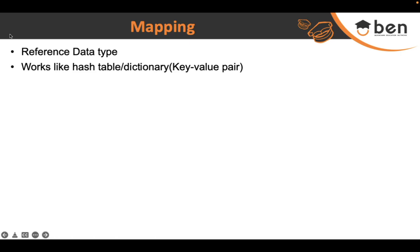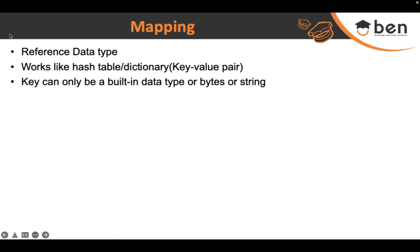In a mapping you can keep the course ID as the key. The key can be any built-in data type in Solidity — string and bytes are also allowed — but not any other reference data type. That means you cannot have a struct, an enum, or a dynamic array as a key. Simple primitive types like unsigned integer, string, boolean, or address are all allowed as keys.